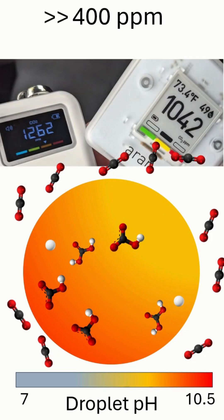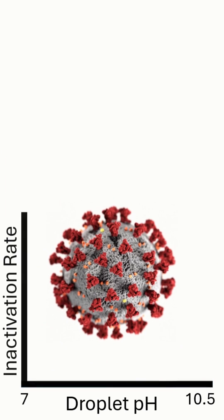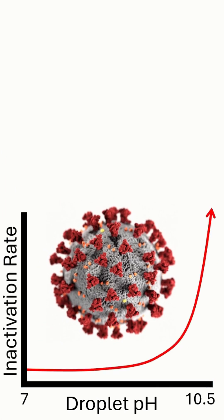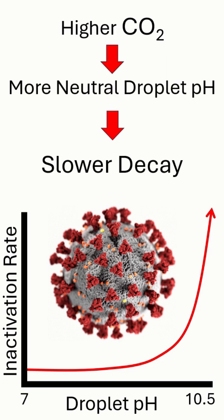If the concentration of CO2 in the air were to increase — say to something like 1000 ppm — the amount of CO2 that leaves the droplet is lessened, and as a result, the pH of the droplet doesn't reach as high. This matters because the rate at which the virus decays is driven by the pH of the droplet itself. So as you increase the CO2 concentration, you neutralize the droplet more, and as a result, the decay rate of the virus in the droplet is going to be slower.